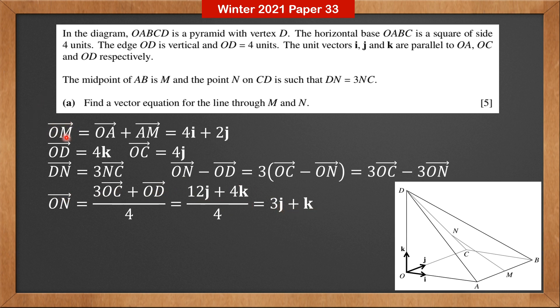Now we have both OM and ON. We can find out the direction vector NM. NM is OM minus ON, which is 4I minus J minus K. That's the direction vector. We can use either M or N as the reference point. Therefore, the vector equation of line through M and N is R equals 4I plus 2J plus T times 4I minus J minus K.